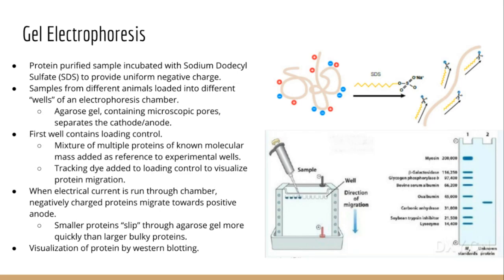Once you have your purified protein, it is common to want to separate them based on their size using gel electrophoresis. The first step requires incubating the protein with SDS — sodium dodecyl sulfate — which gives all of your proteins a uniform negative charge. It also denatures them: a folded transcript becomes linearized by the SDS and has a uniform negative charge. Samples from several different animals are then loaded into wells of an electrophoresis chamber.